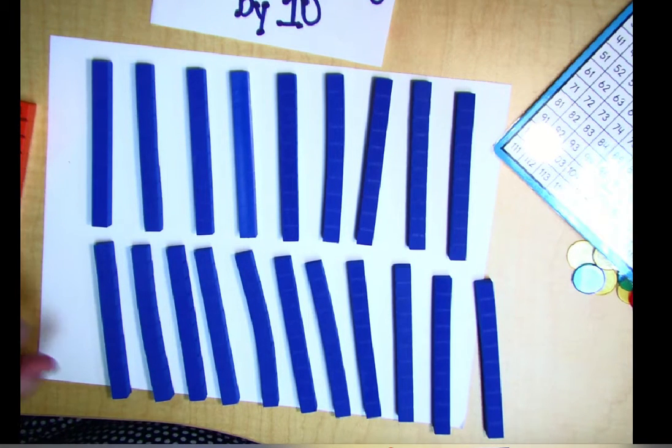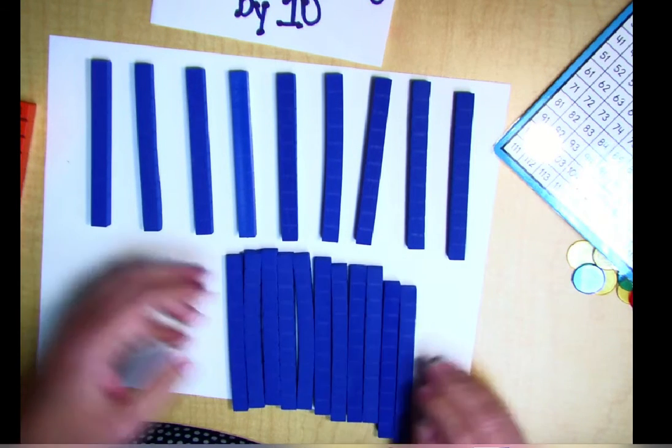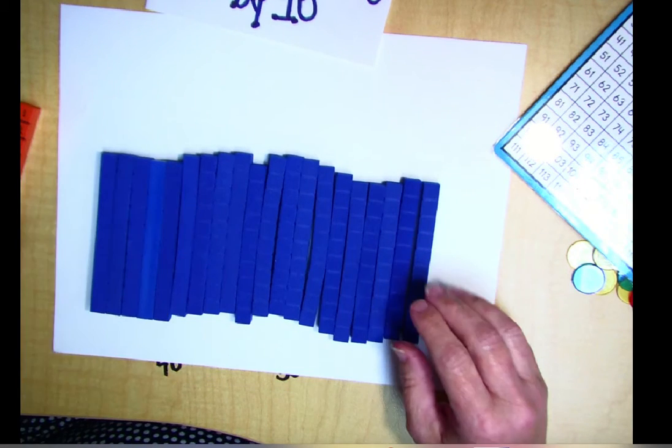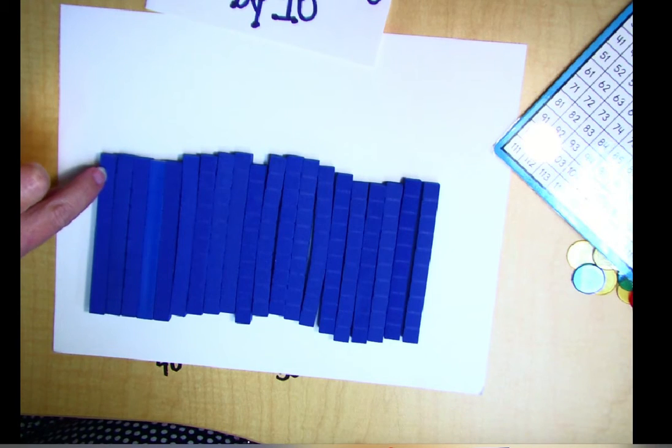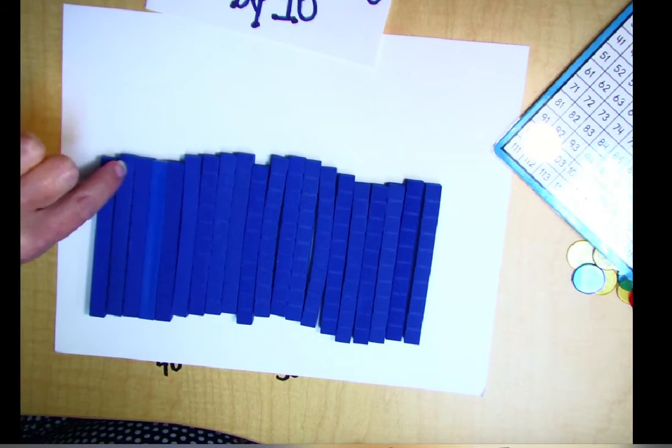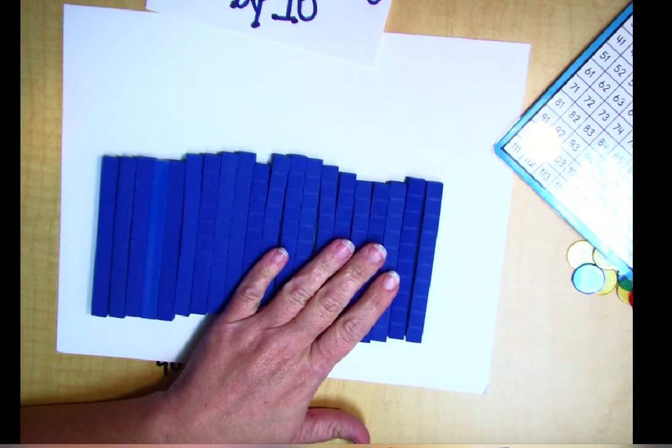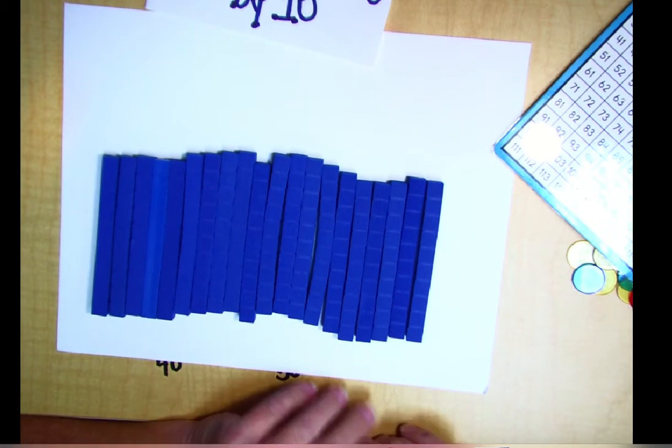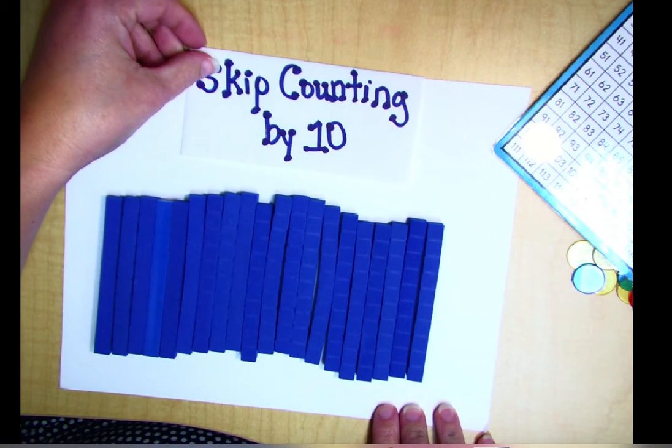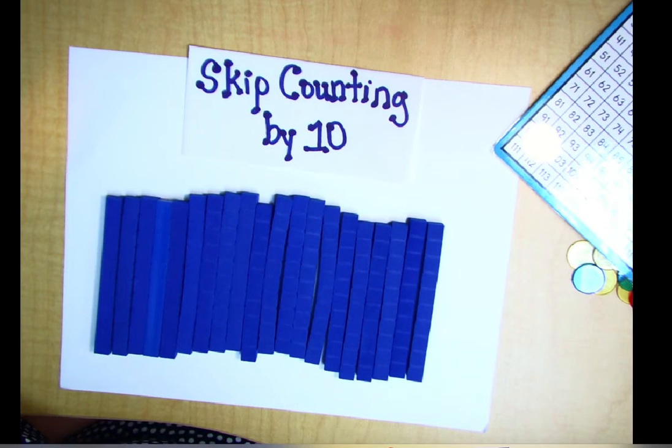We could keep skip counting more and more and more. Skip counting is a more efficient way to count than it would have been to count 1, 2, 3, 4, 5, 6, 7, 8, 9, 10, 11, 12, 13, 14, 15. To count all of these little cubes one by one would have taken us a long time. So a more efficient way to count is skip counting by 10.